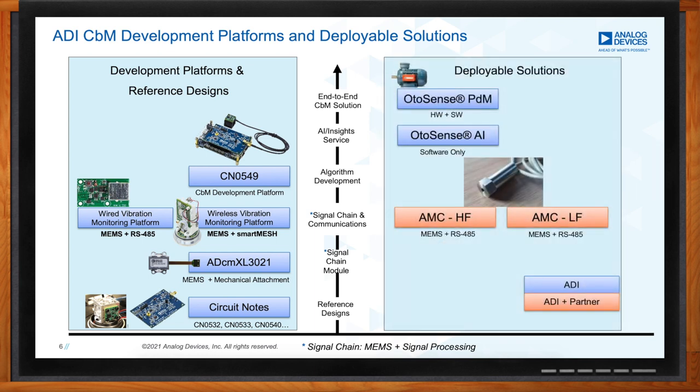On the right-hand side of the slide are deployable solutions — where ADI itself provides a product that can be mounted on an asset with no additional R&D required. Examples here are ADI AutoSense, and we've also partnered with companies like AMC to provide more RS-485 connected solutions.